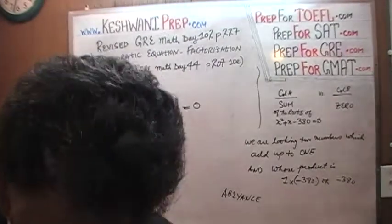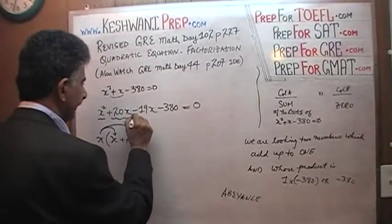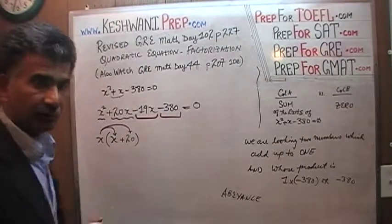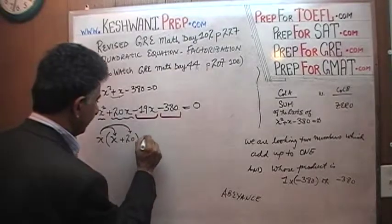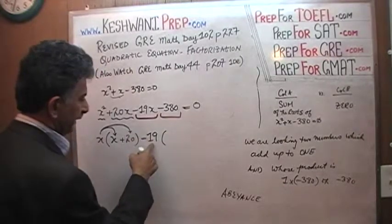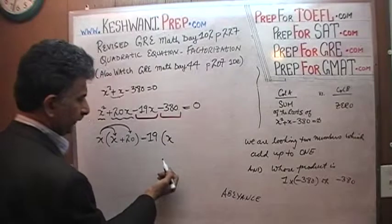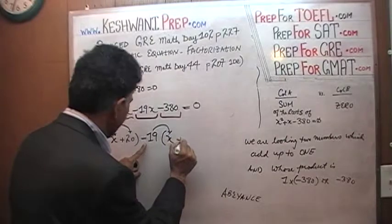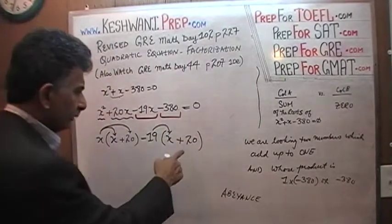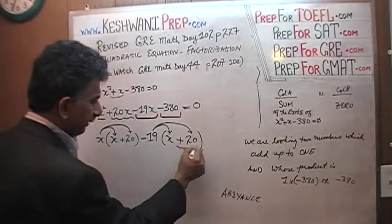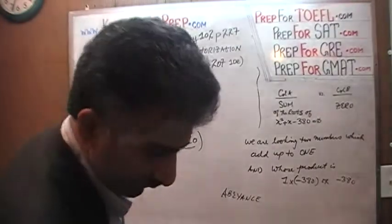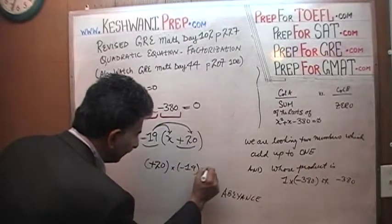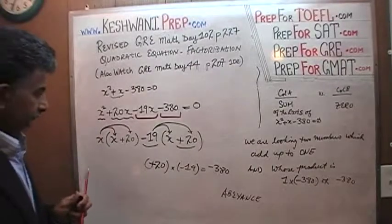Now we concentrate on the next two terms: negative 19x and negative 380. Is there anything common? Yes — 19 is the common factor, because 38 is made up of 19 times 2. So we take out negative 19 as a common factor. From negative 19x we are left with x; from negative 380, negative 19 times positive 20 gives negative 380. So we have negative 19 times (x plus 20). That part is done.